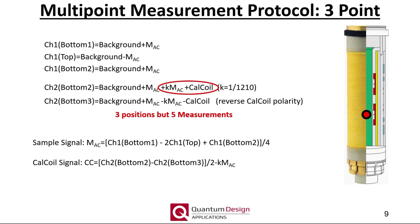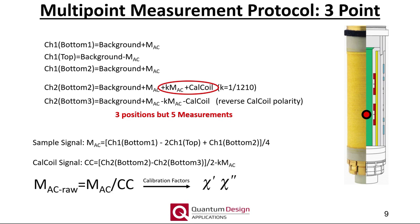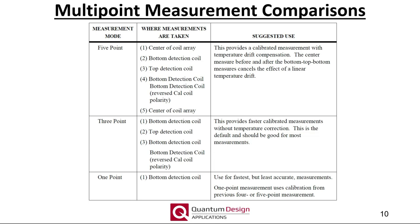From these five measurements, the sample signal and calibration coil signals can be calculated. The raw AC response of the sample is then simply calculated by taking the ratio of the two. Additional calibration factors are then applied to arrive at the measured in- and out-of-phase components of the susceptibility. The amplitude and phase can then be calculated accordingly. This table summarizes the differences between the one-, three-, and five-point measurement modes.